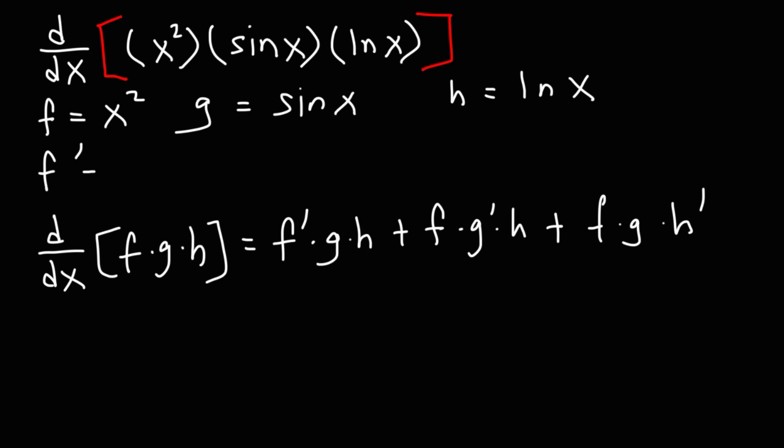So now let's find f prime. The derivative of x squared is 2x. As for g prime, the derivative of sine is cosine. And as for h prime, the derivative of the natural log of x is 1 over x.